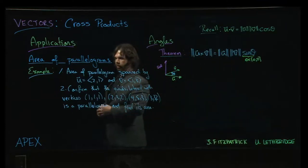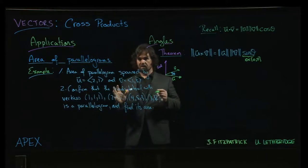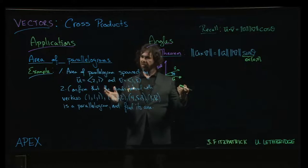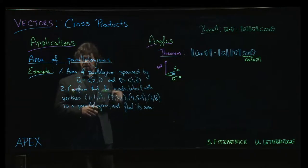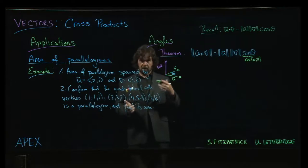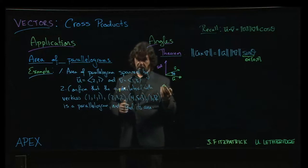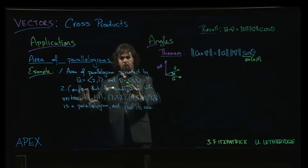We're going to end this section by looking at some applications. Arguably the main application is the one we started with, constructing an orthogonal vector given a pair of input vectors. But there are other interesting uses of the cross product, one being finding areas of parallelograms. For now, let's just focus on the parallelogram.